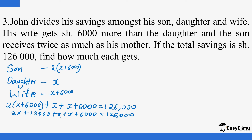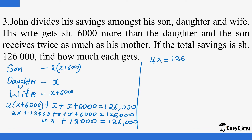Collecting like terms: 2x + x + x = 4x, and 12,000 + 6,000 = 18,000. So: 4x + 18,000 = 126,000. Moving 18,000 to the other side: 4x = 126,000 − 18,000 = 108,000.